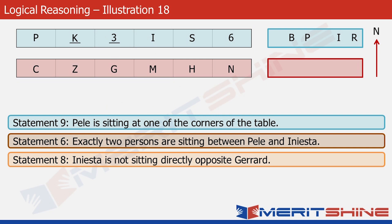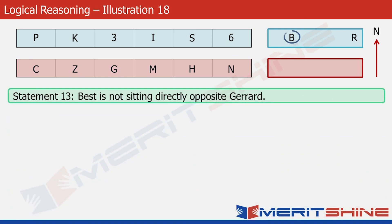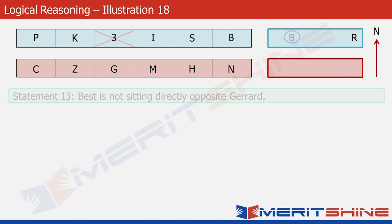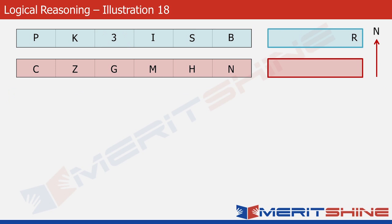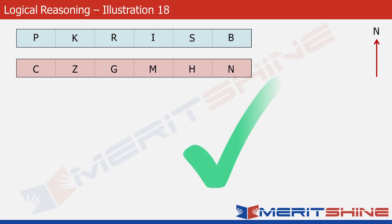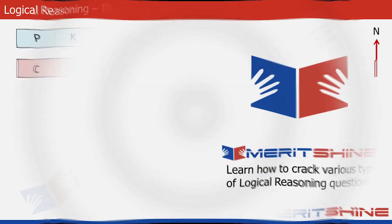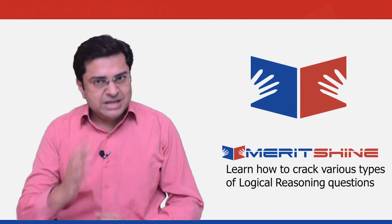Statement 13 says Best is not sitting directly opposite Gerard — so Best cannot be at position 3. The only position left in this row is number 6, so let's put Best at position 6. The only person remaining is Ronaldo, and the only position left is number 3. So Ronaldo goes to position 3, and with this we have solved the problem.